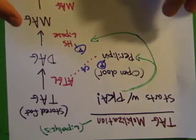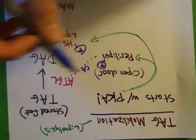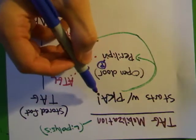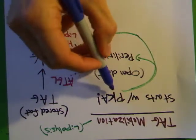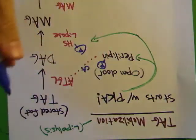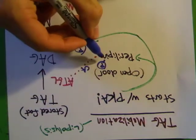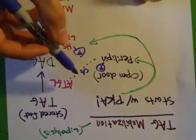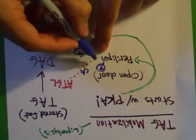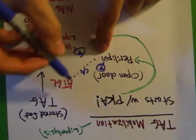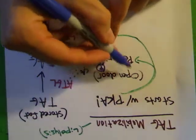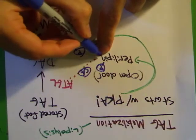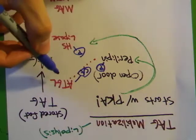Lipolysis, or mobilization of your triglycerides, starts with PKA. The whole course can be summarized between PKA's actions and PP1's actions. PKA phosphorylates perilipin, which opens the door to the whole cascade. PKA starts it off, phosphorylates, and then you have a co-activator from perilipin which activates ATGL.